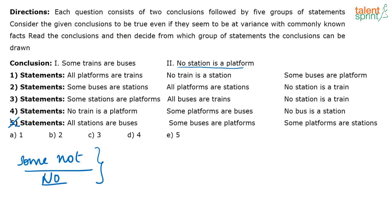Now look at option 2. What is given here? It is given: no station is a platform. Look at option 2 — they have given 'all platforms are stations.' If that is the case, then this conclusion will definitely not come. So eliminate option 2 as well. As I said, the actual way of solving this question is to draw the Venn diagram of each and every statement and see whether these conclusions follow, but that is very time consuming. So option 5 has no negative statements — removed. Option 2: 'all platforms are station' is given but in the conclusion we need 'no station is platform' — also eliminated.